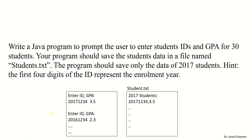If this student is a 2017 student — and we can know that by looking at the first four digits — then we will write the student ID, comma, and then the GPA. For example, if the second student is 2016, that data should not be saved in our file. So we will read from the keyboard ID and GPA, and then write into the file only for 2017 students.